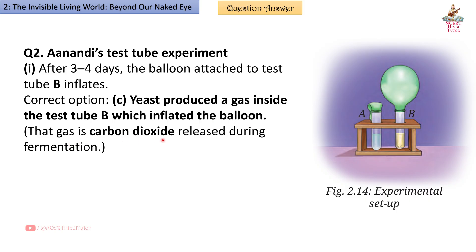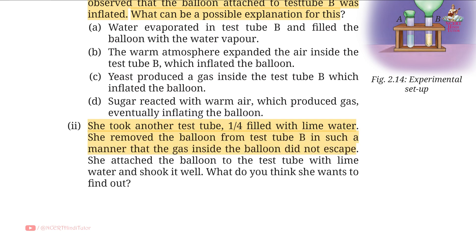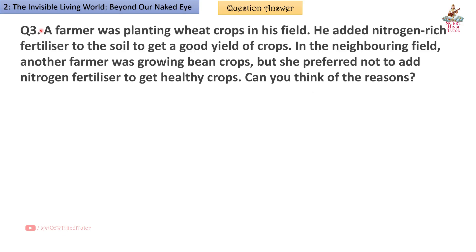That gas is carbon dioxide released during fermentation. Second — she took another test tube one-fourth filled with lime water, removed the balloon from test tube B without letting the gas escape, attached it to the lime water test tube, and shook it well. She wants to find out whether the gas is carbon dioxide, as lime water turns milky in the presence of CO2.